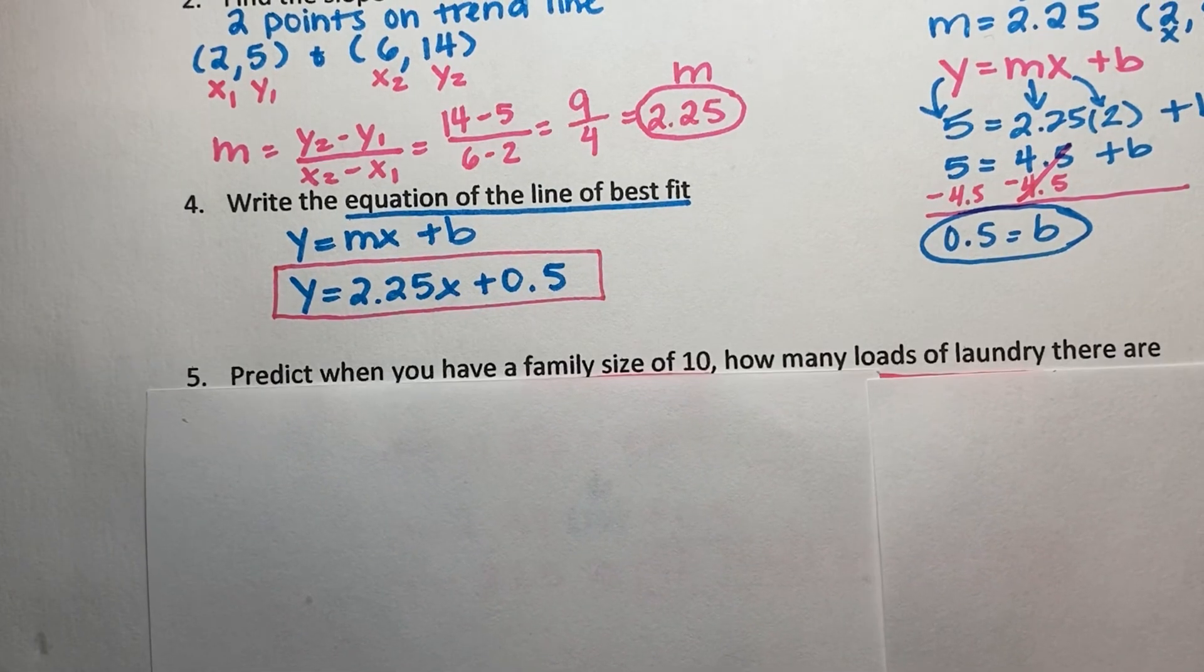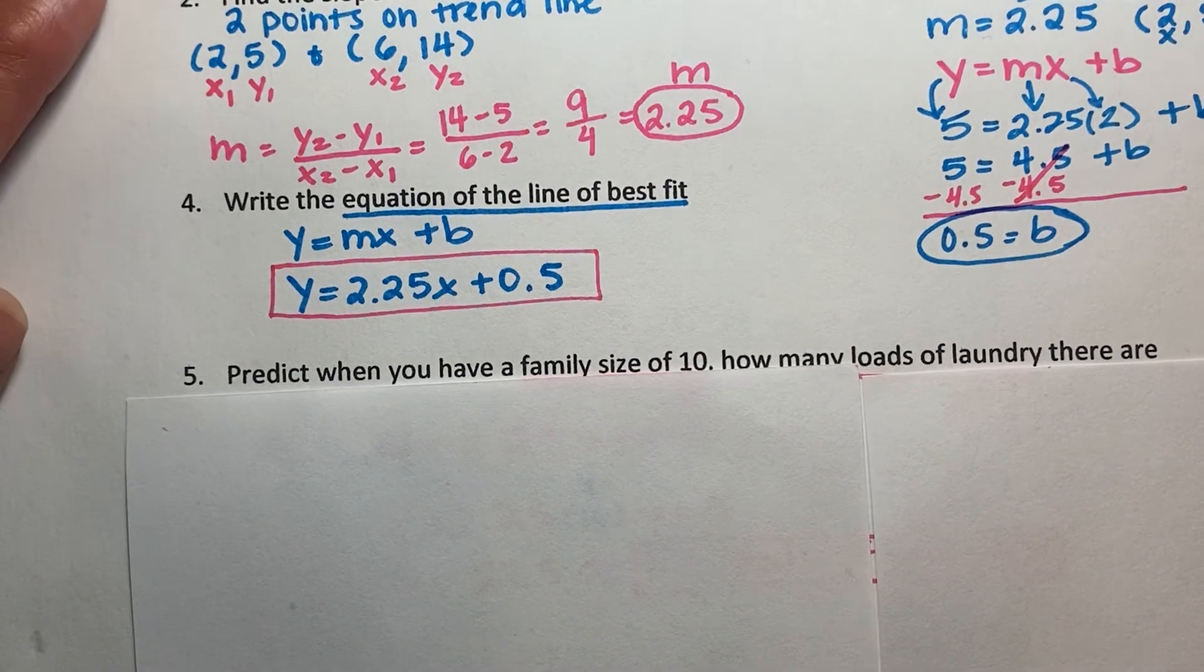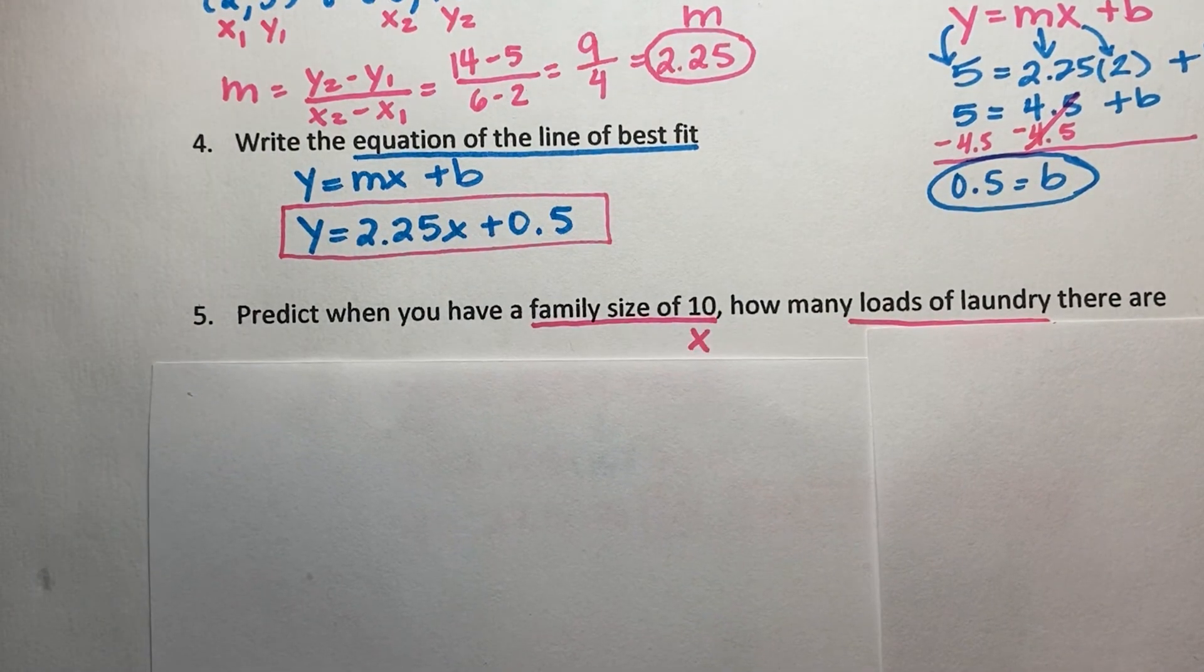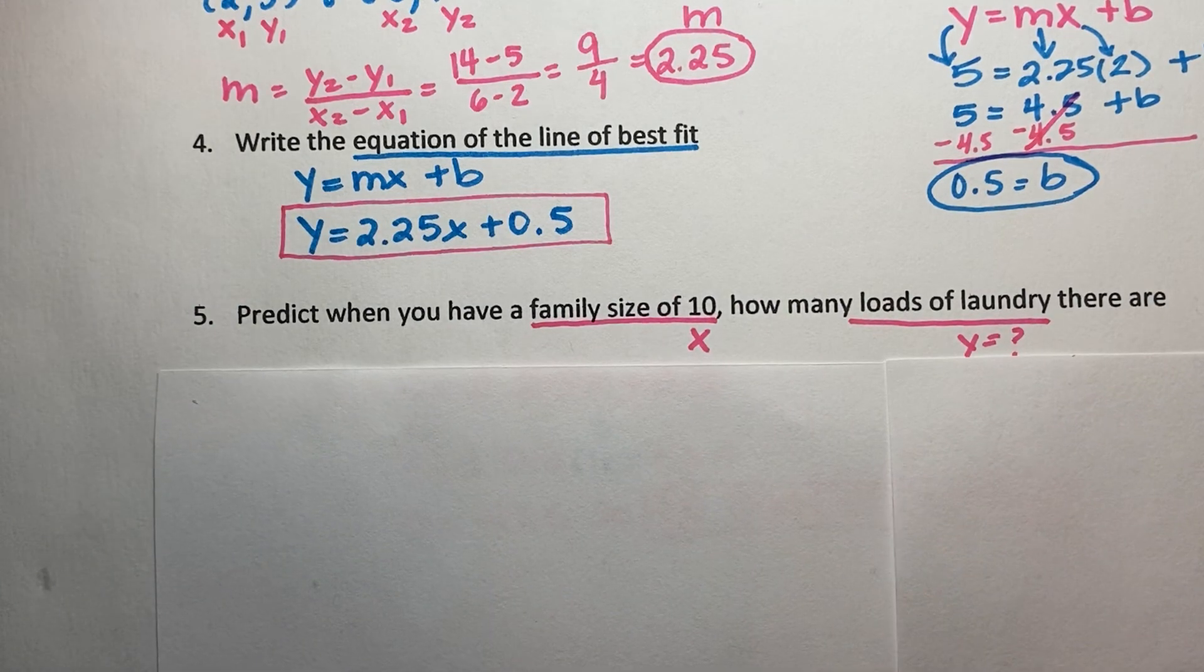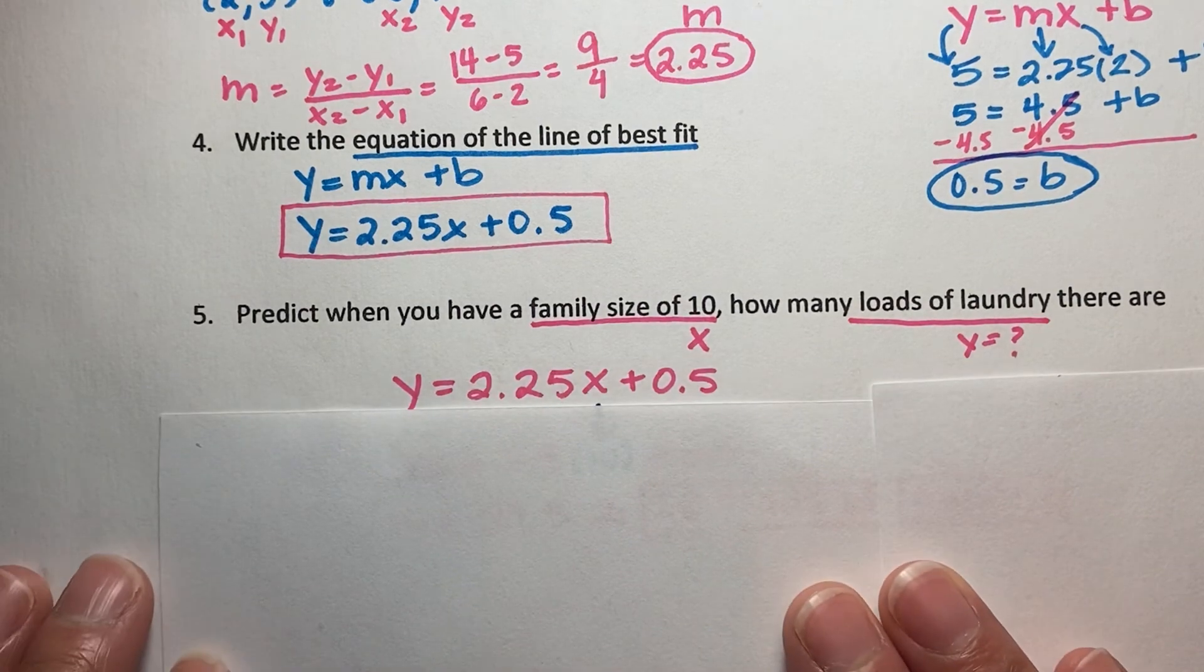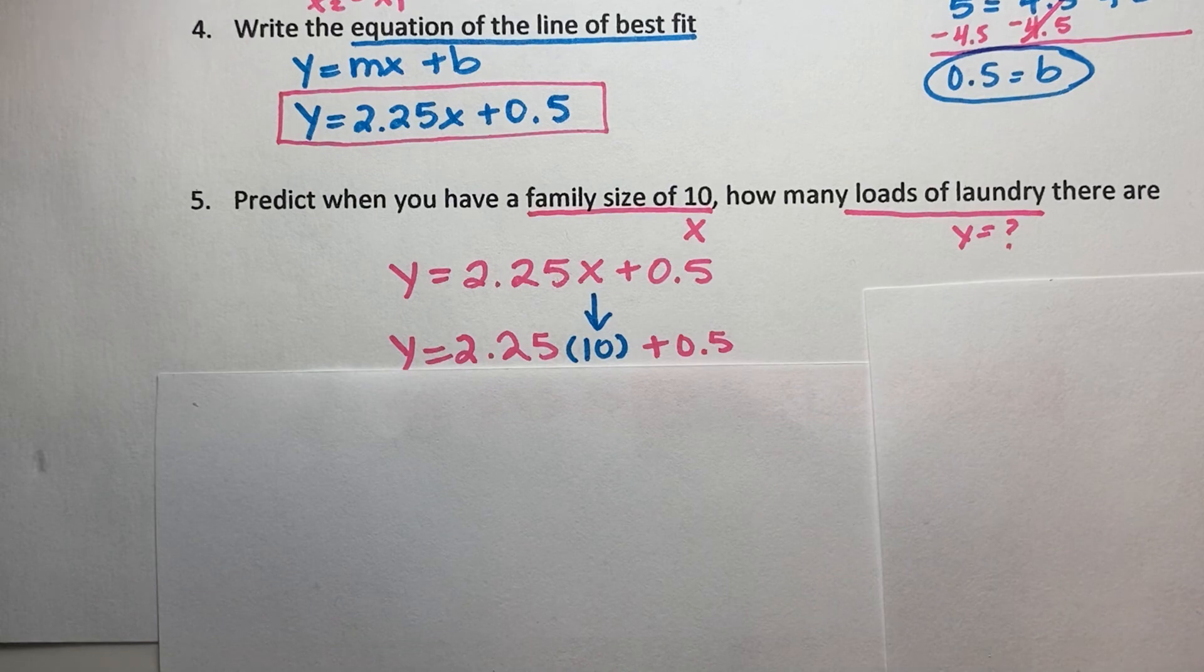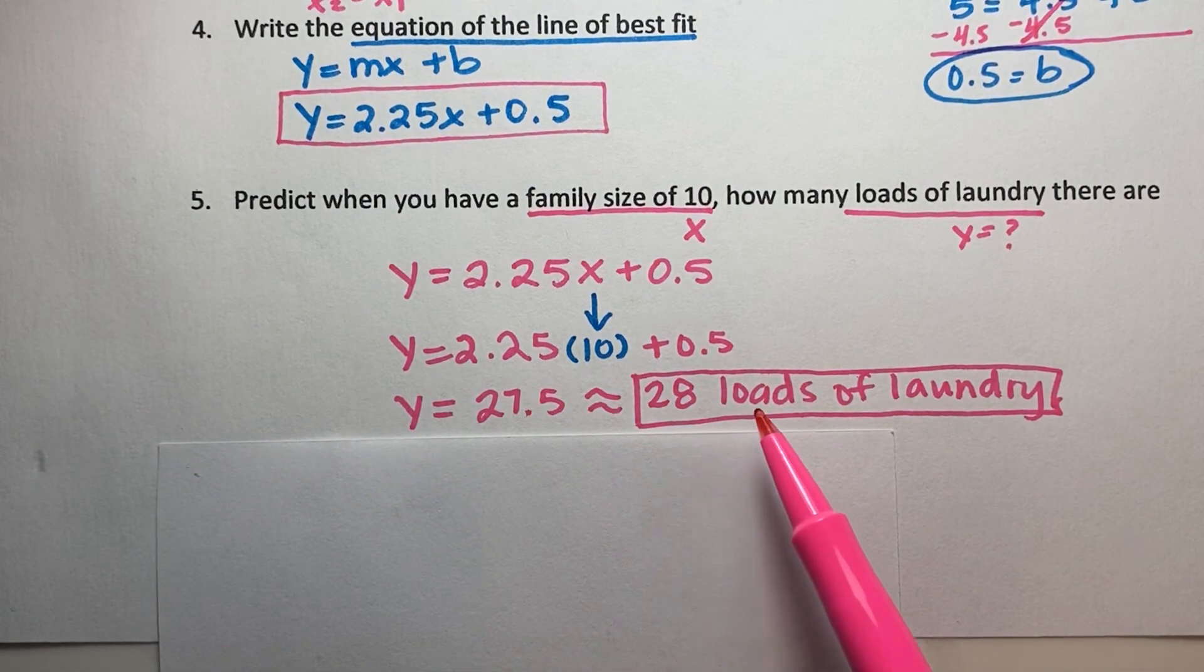And then last, we're going to answer this question. We're going to use our equation to predict when you have a family size of 10, how many loads of laundry are there? So when you read this, you want to identify family size of 10 is your x value. How many loads of laundry? We don't know. That would be finding what y is. So if you know the equation, y equals 2.25x plus 0.5, we're going to plug in 10 for x, and we're going to substitute that in using parentheses. So we're going to take 2.25 times 10 plus 0.5. And when we do that, it simplifies to 27.5, which is approximately 28 loads of laundry.